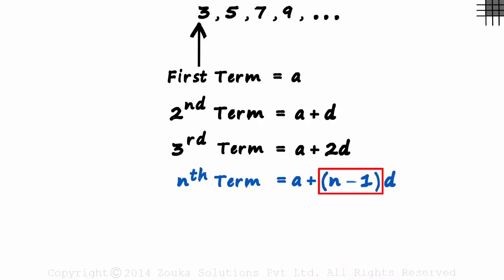Why N minus 1? Observe the pattern. Third term 2D, second term 1D. So this is the formula we had seen earlier: first term plus N minus 1 times D. It's just that we have written the first term as A.